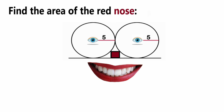Hello everybody and welcome back to another math learning video. Today I brought you guys this creature, and we're tasked to find out the area of his red nose. We are given the area of his eyeball, so the middle of the circle to the edge is 5, which means the radius of these circles is 5, and that is all the information we are given.